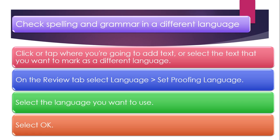To check spelling and grammar in a different language: click or tap where you want to add text, or select the text that you want to mark as a different language. On the Review tab, select Language, then Set Proofing Language. Select the language you want to use and select OK.